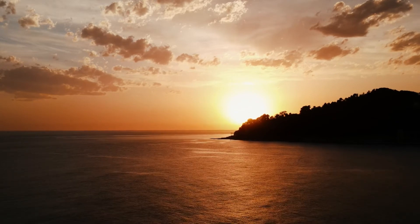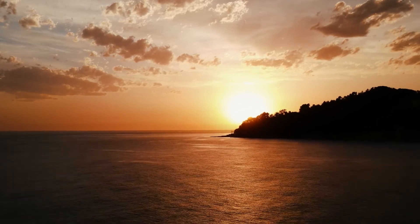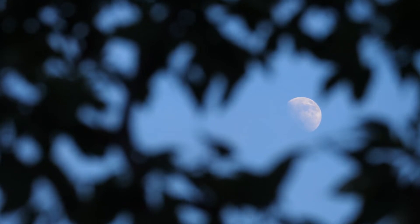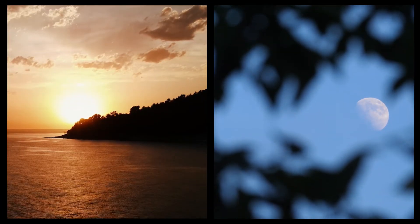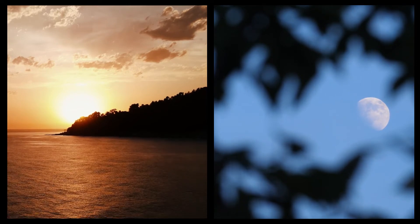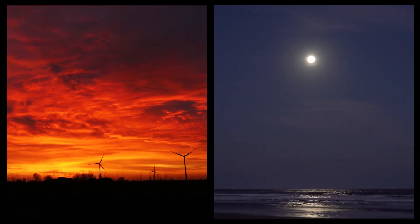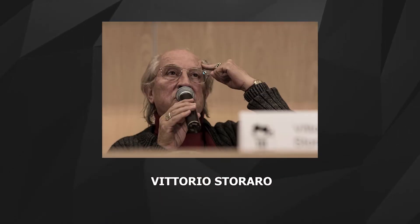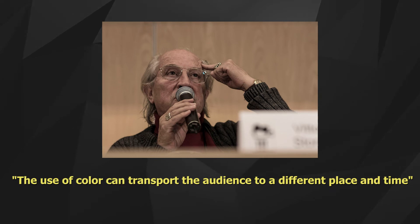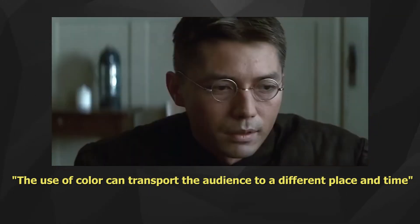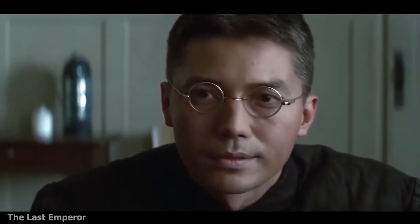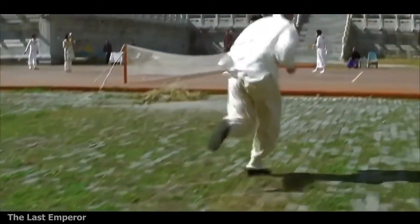The light at dawn and dusk has a warm color, while moonlight always looks cool. The creator doesn't have to tell the audience what time it is by using text. Instead, they can use different tones to help the audience feel the passage of time — this is a charm of color. Famous photographer Vittorio Sadoraro once said the use of color can transport the audience to a different place and time. This is just what he did in the film The Last Emperor.